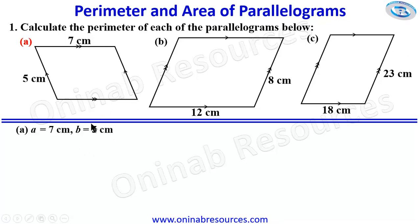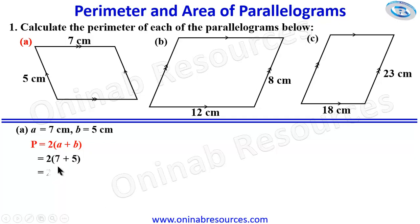We recall the formula P = 2(A + B). So we have 2(7 + 5). Dealing with the bracket first: 7 plus 5 gives 12, so we have 2 times 12, which gives 24 cm as the perimeter of the parallelogram in part A.